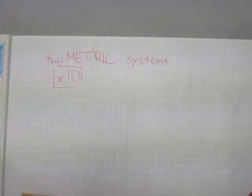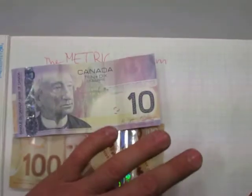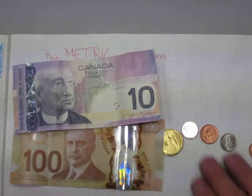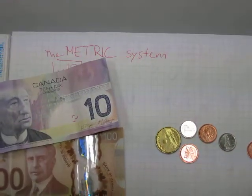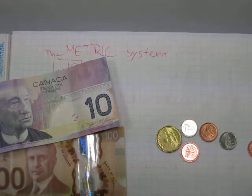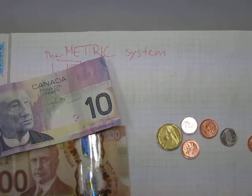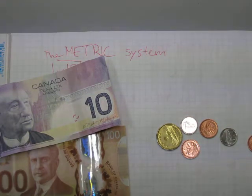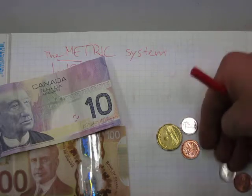Where do you use the metric system on a daily basis? Right here — when it comes to money. I have some Canadian bills and coins. The money is based on a metric system. You might be thinking, how is money metric? Where is the metric in the monetary system? Let me show you where it is.